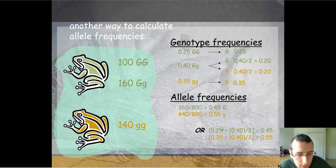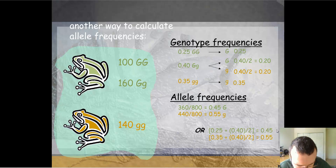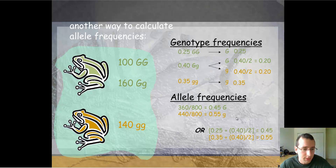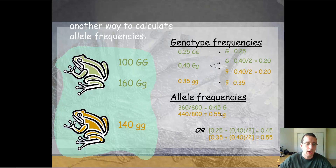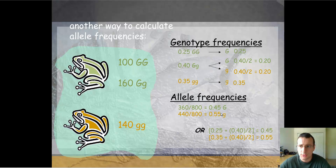So the rule is: you get all of the homozygous ratio plus half of the heterozygous ratio toward the allele frequency for that kind of allele. This is a useful shortcut to determine allele frequency if you already know the genotype frequencies. On the next video, we're going to talk about how to use this to do Punnett squares and population predictions across generations.